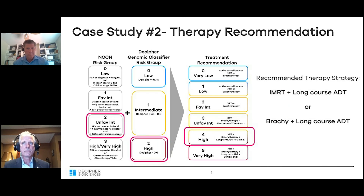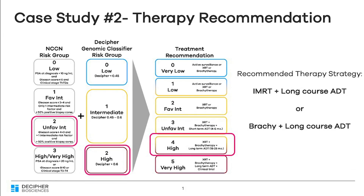We felt the NCCN risk grouping placed him at unfavorable intermediate risk — two points for that — and the high Decipher score added two more points, placing him in the four category. Like the previous patient, we offered him a long course of androgen deprivation therapy.